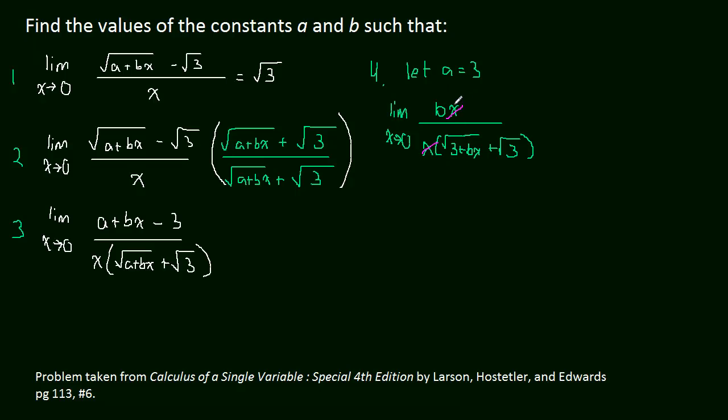So these X's, though, they cancel. You have an X in the numerator and an X in the denominator. They're both multiplying, so those can divide to 1. So let's continue. So this will end up being the limit as X approaches 0 of B over the square root of 3 plus BX plus radical 3.